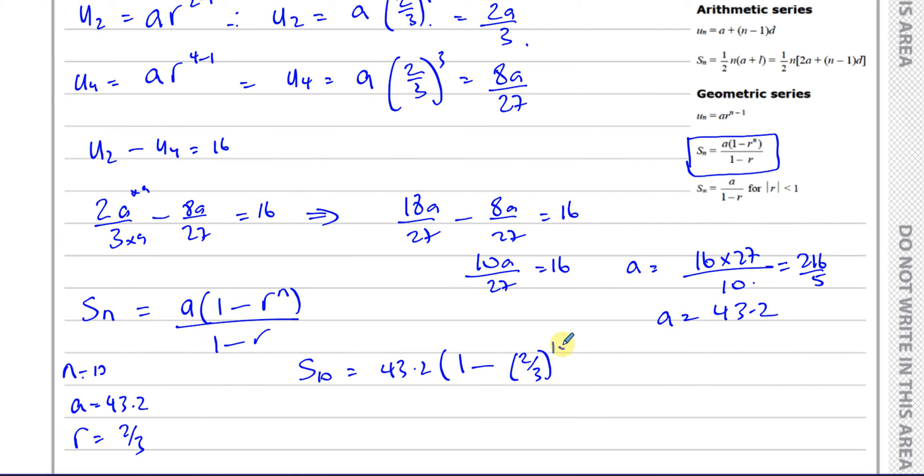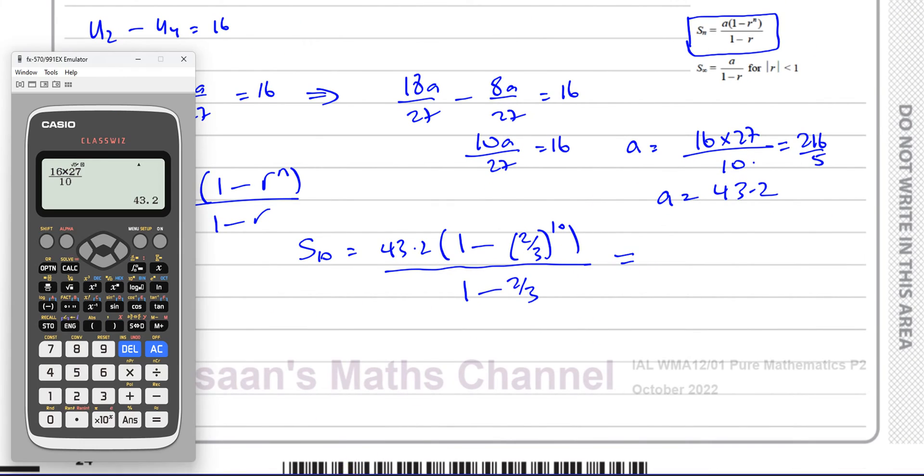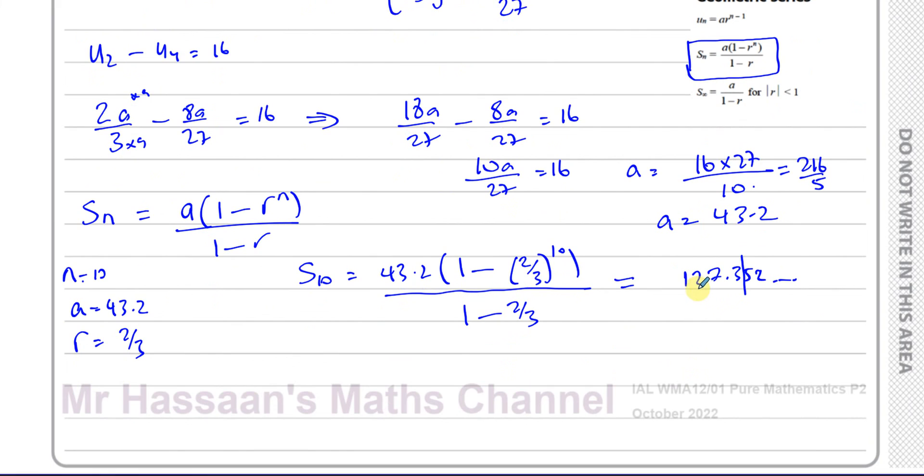So that will give me my answer, which I round to one decimal place. I can put the last answer, which is 43.2, times one minus two-thirds to the power of 10, close that bracket, over one minus two-thirds, which is one-third. And that will give us the answer, which is 127.352. So now we want to round it to one decimal place, as the question states. So it's going to be 127.4. The sum to the first 10 terms is 127.4, and that concludes this question.